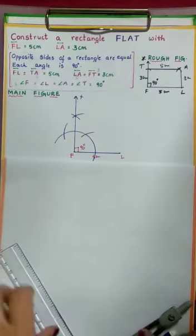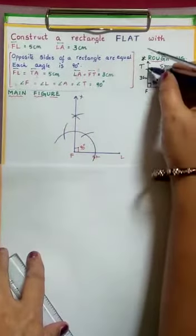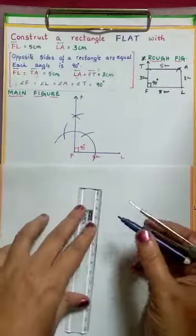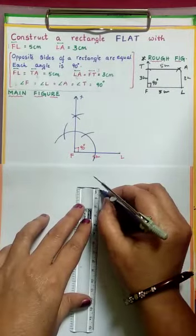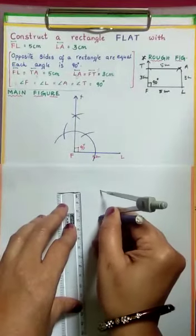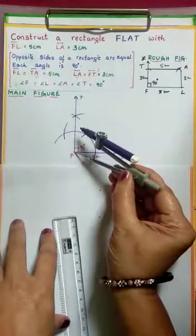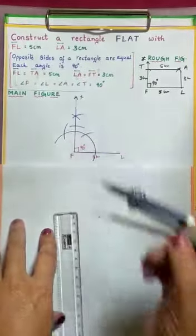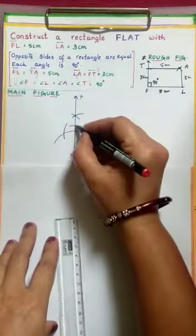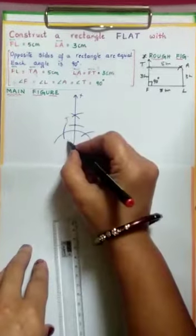Next, we have to construct side FT = 3 cm. So take 3 cm radius — starting point here, ending point at 3. Take this radius. Placing your needle end at F, cut this ray. Where it intersects, name it as T. This is 3 cm.